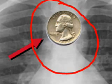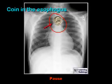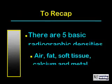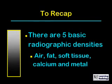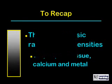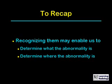To recap, the five basic radiographic densities are air, fat, soft tissue, calcium, and metal. By knowing them, we can frequently recognize what an abnormality is and determine where the abnormality is located.